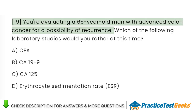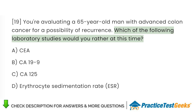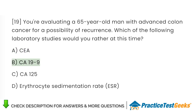You're evaluating a 65-year-old man with advanced colon cancer for a possibility of recurrence. Which of the following laboratory studies would you order at this time? A. CEA. B. CA 19-9. C. CA 125. D. Erythrocyte sedimentation rate, ESR.